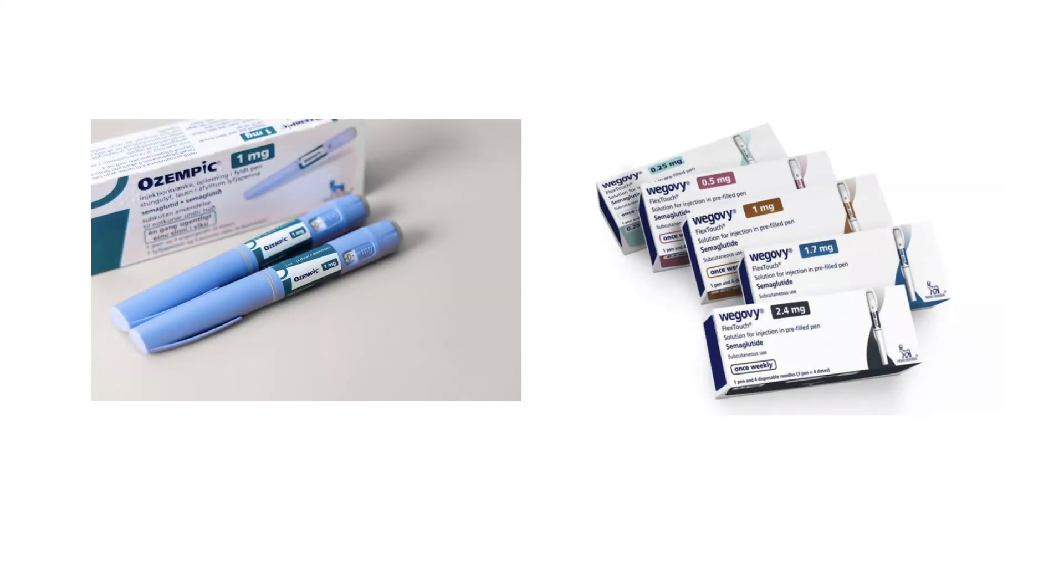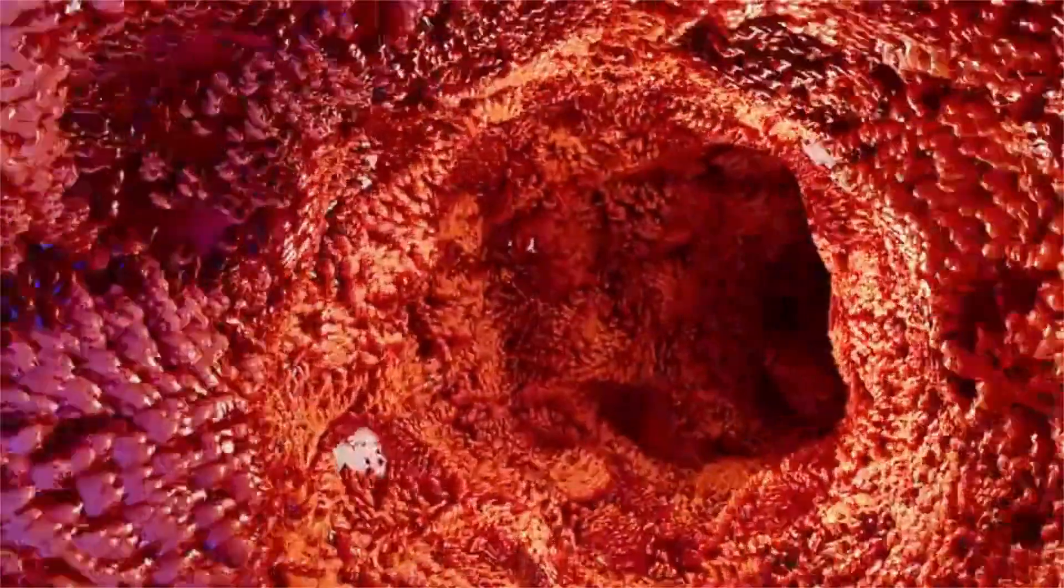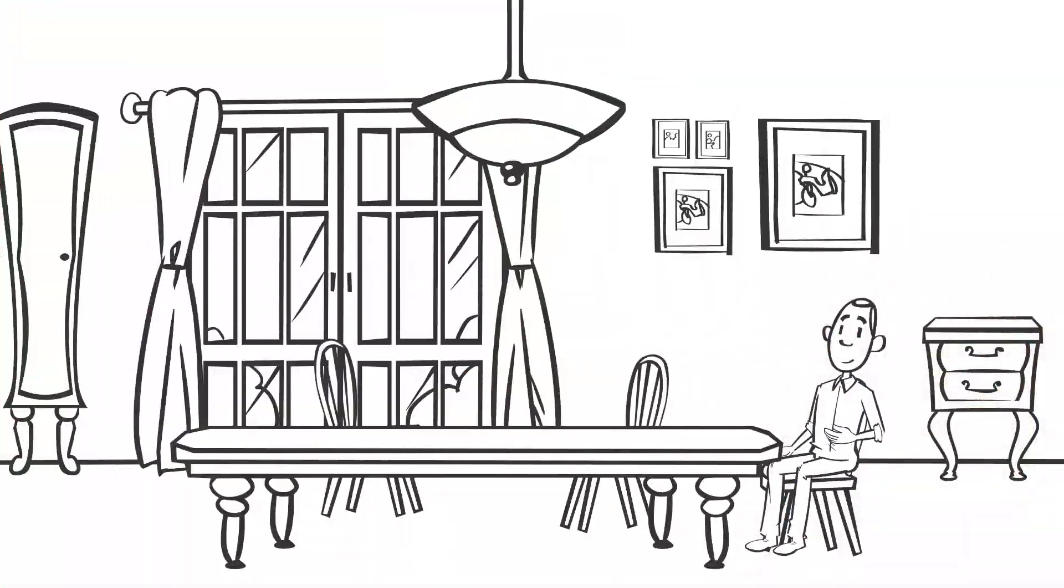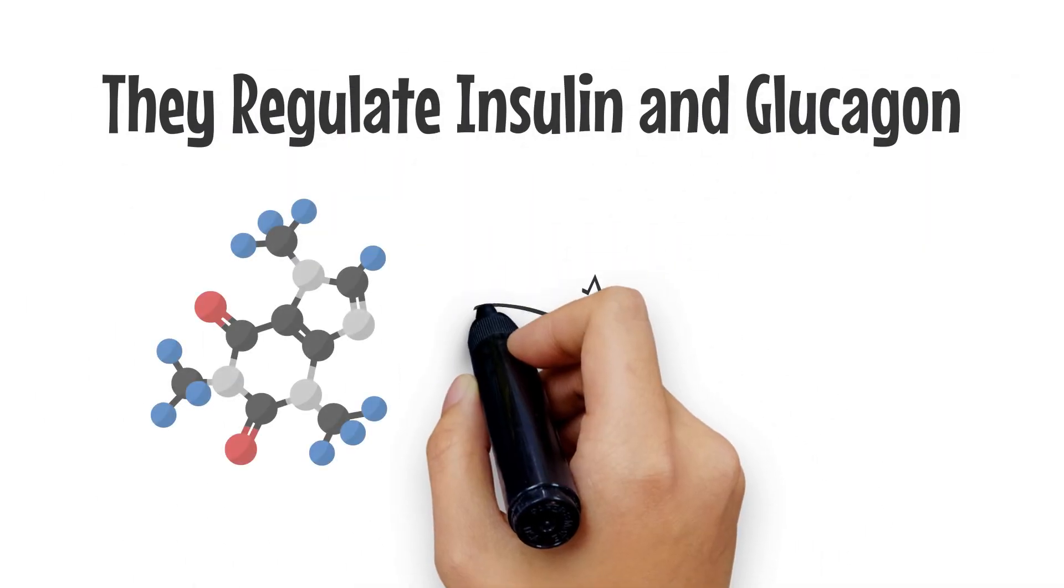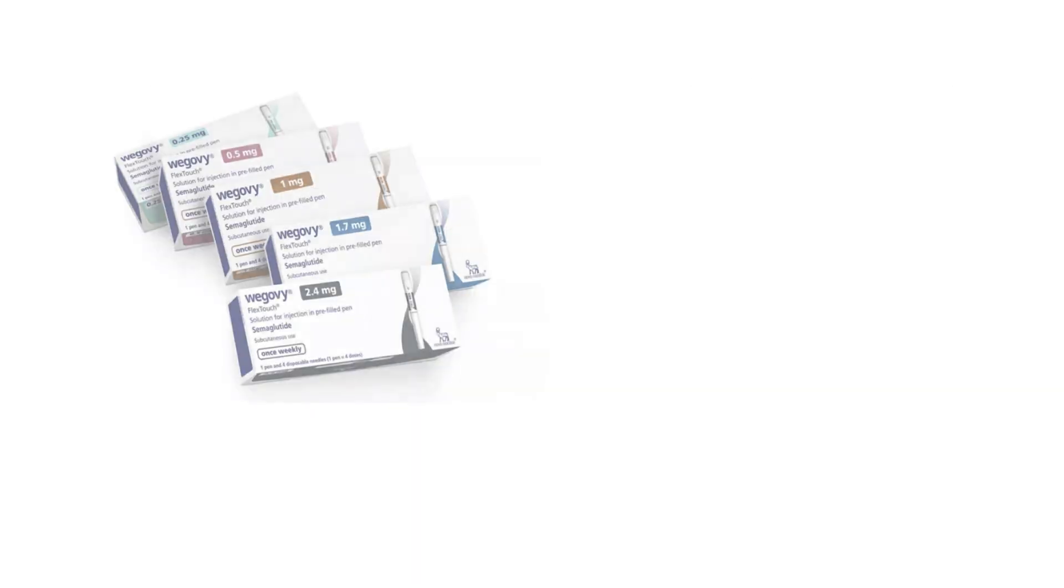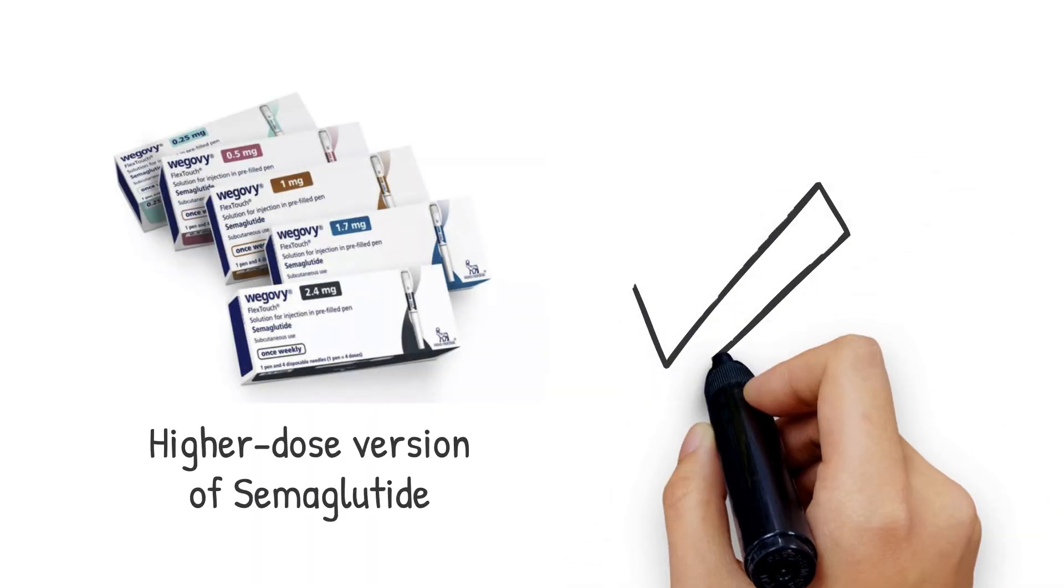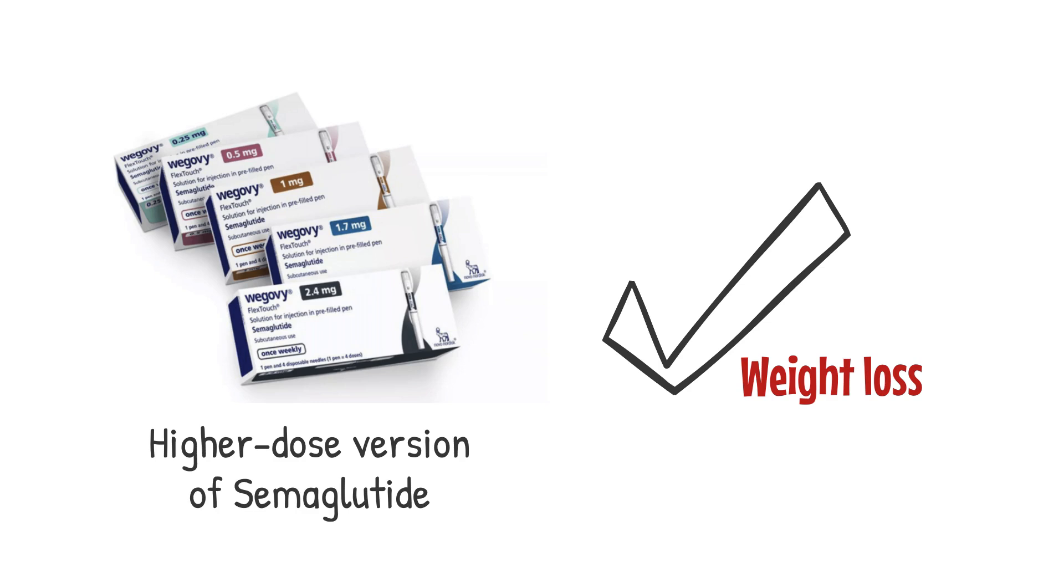Ozempic and Wegovy: both of these medications work by mimicking GLP-1. They slow down how quickly your stomach empties, which helps you feel fuller for longer. They also help regulate insulin and glucagon, key hormones involved in blood sugar control. With Wegovy being the higher-dose version of Semaglutide, it tends to result in greater weight loss than Ozempic at its standard dosage for diabetes treatment.